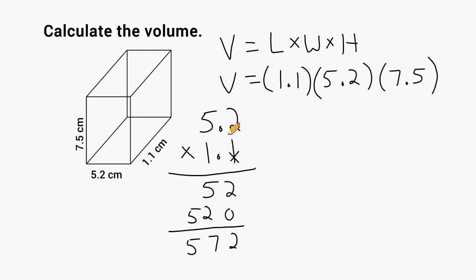And we add these columns together for a total of 572, but we must remember that we have a decimal in the problem, so we need one in the answer. We have one, two place values altogether in the problem after our decimals, so our decimal point would go in this position.